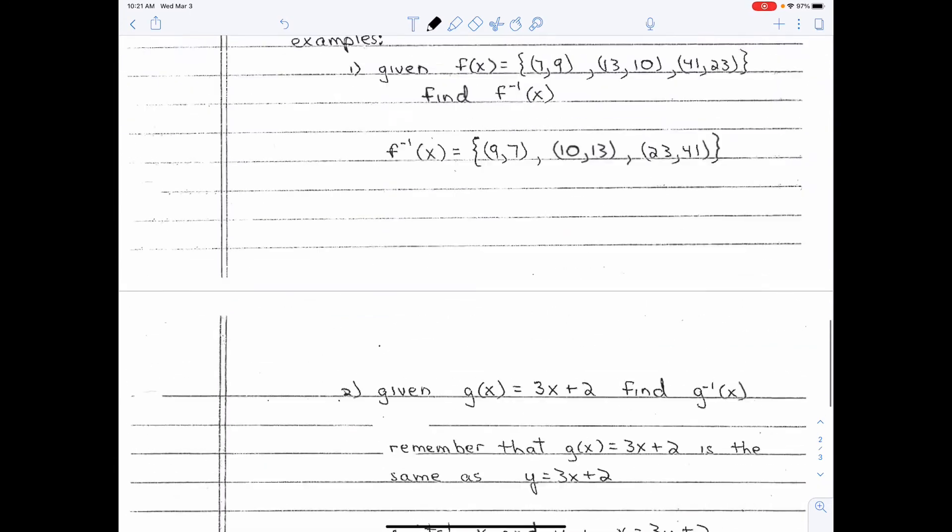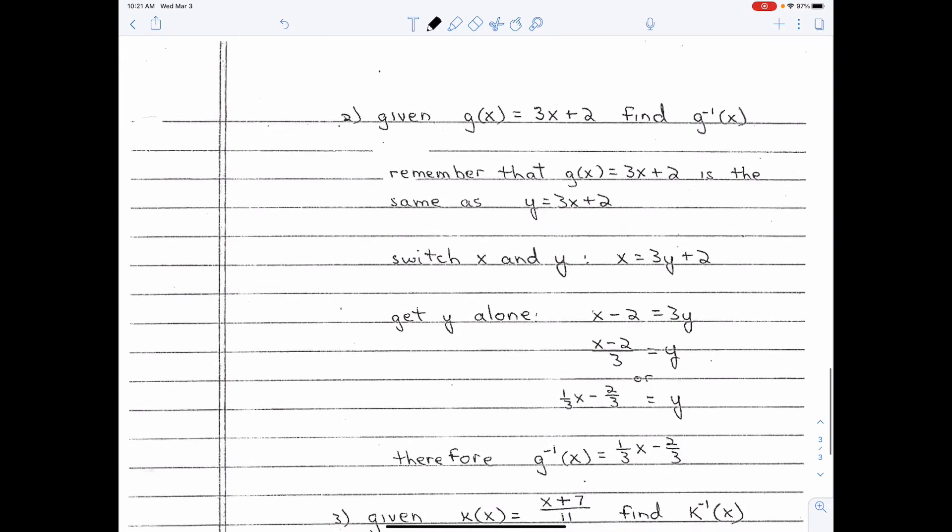Now, for equations. So, that's pretty straightforward. And actually, this is pretty straightforward, too. It's not really all that difficult if you can just get past the notation. Given g(x) equals 3x plus 2, find g to the negative one of x. So, g(x) equals 3x plus 2 means y equals 3x plus 2.